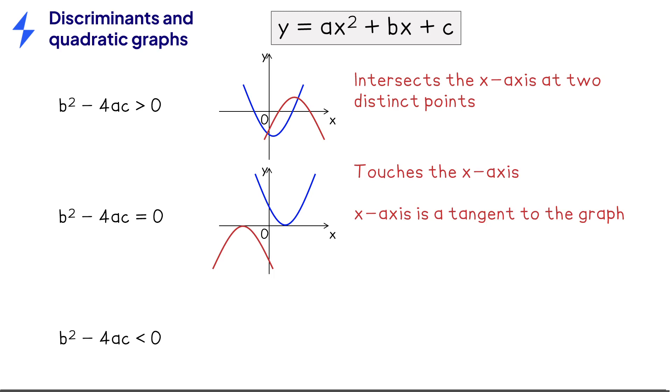If the discriminant is negative, then the graph does not intersect the x-axis at all. This means the graph is either always positive, and therefore is above the x-axis, or is always negative, and therefore is below the x-axis.